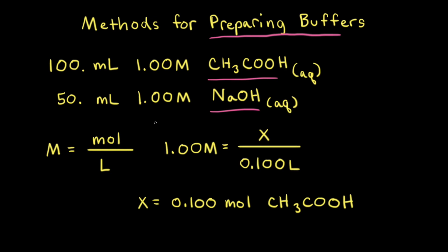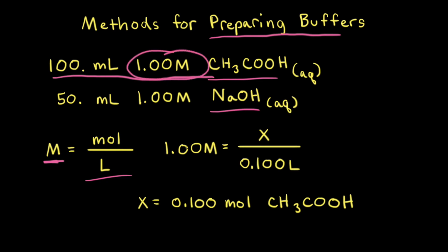Our first step is to figure out how many moles of acetic acid we have. If we have 100 milliliters of a 1.00 molar solution of acetic acid, we can use the equation molarity equals moles divided by liters. Since the concentration is 1.00 molar and the volume is 100 milliliters, which equals 0.100 liters, x is equal to 0.100 moles of acetic acid.